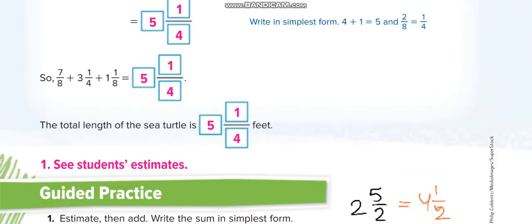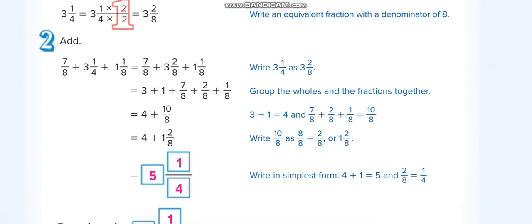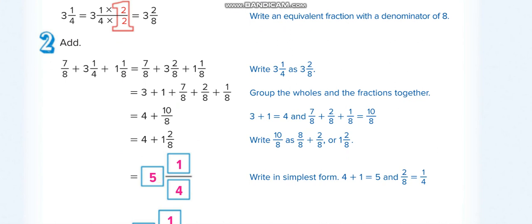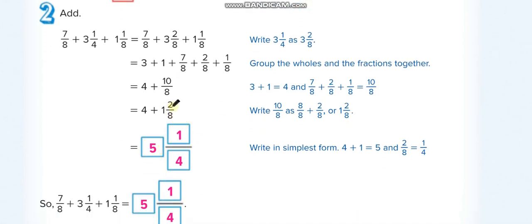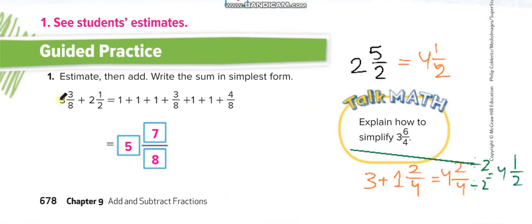When you have different denominators, you have to make them the same first. For example, if one denominator is 8 and another is 4, multiply the 4 fraction by 2 to get 2/8. Then add: the result becomes 5 whole and 2/8. Simplify by dividing top and bottom by 2 to get 5 and 1/4.